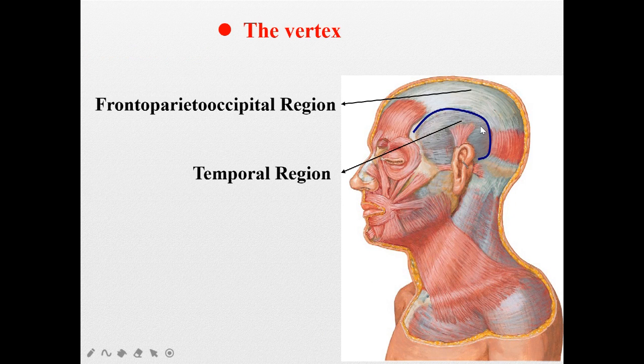The vertex is divided into two regions: the frontal-parietal-occipital region and the temporal region.